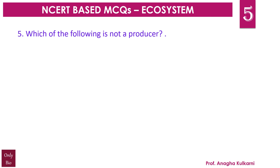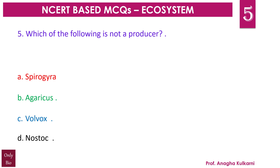Question number 5. Which of the following is not a producer? A. Spirogyra, B. Agaricus, C. Volvox, D. Nostoc. The correct answer is B. Spirogyra, Volvox, and Nostoc are all producers, whereas Agaricus is a fungus and is certainly not a producer.